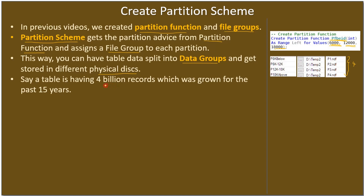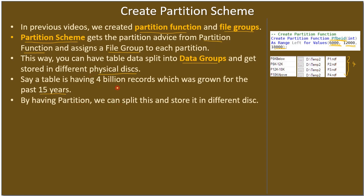Say a table has four billion records grown over 15 years. By having partitioning, we can split those four billion records and store them on different disks — maybe the more frequent or recent data on a high-performing RAID disk, and older history on other RAID disks. Usually people put costly, high-performing RAID disks for the recent database, perhaps the current or past three years, and keep remaining history on good but less expensive disks. The recent disk is costlier but its response time is very quick.